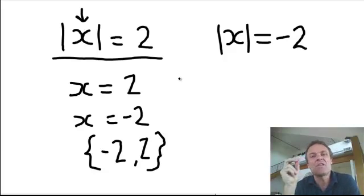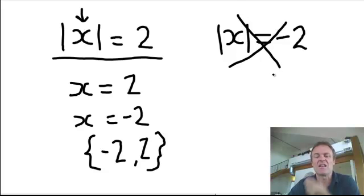Now remember, anything you absolute will be a positive answer. So how on earth can I have that? How can I absolute anything and it become a negative 2? Those are the trick questions. You just can't do it, right?